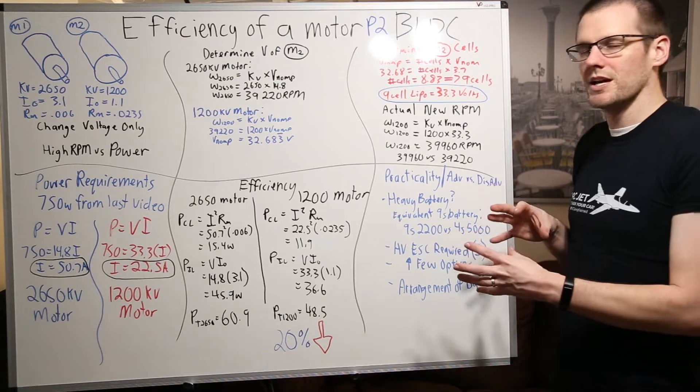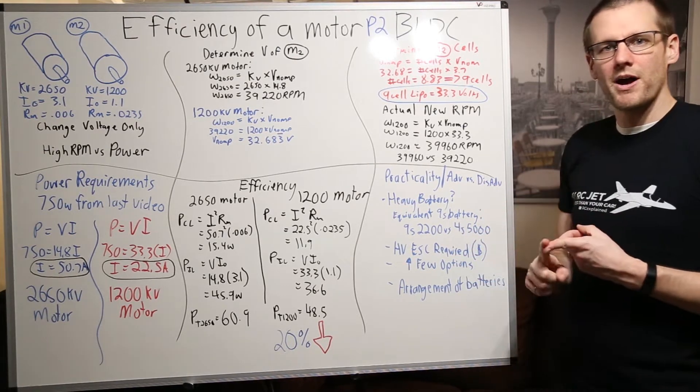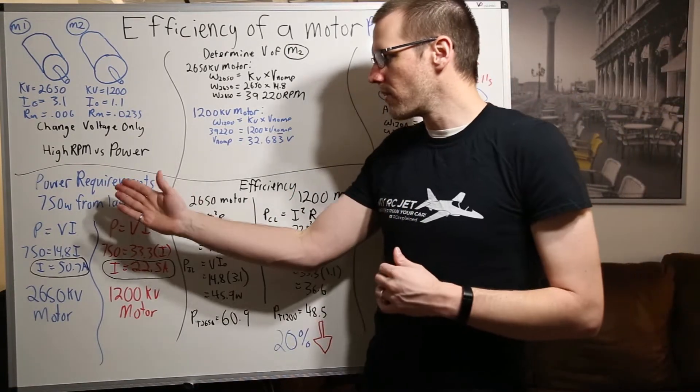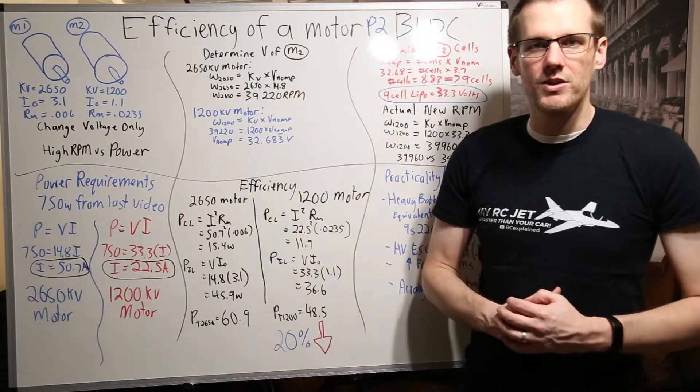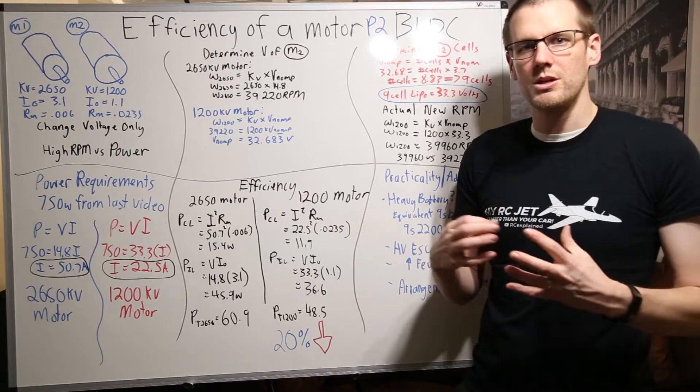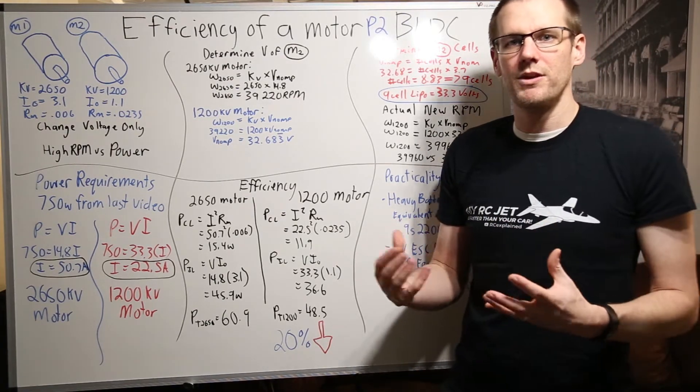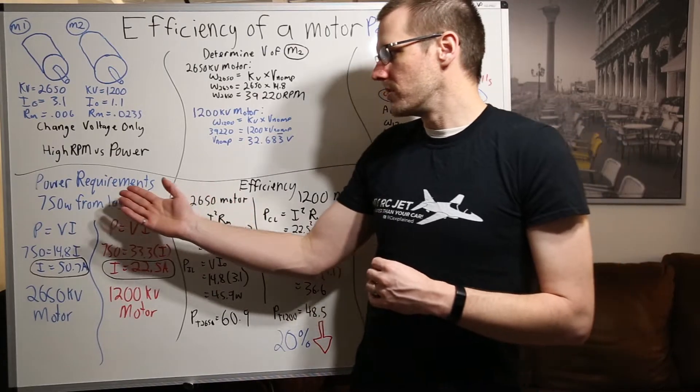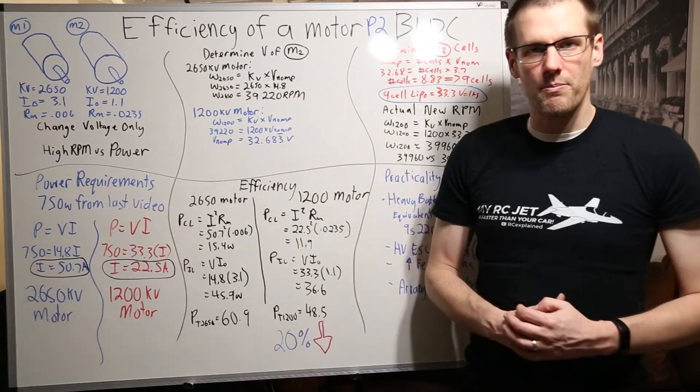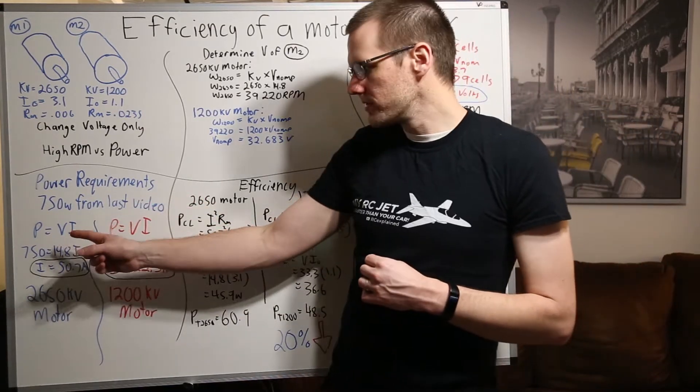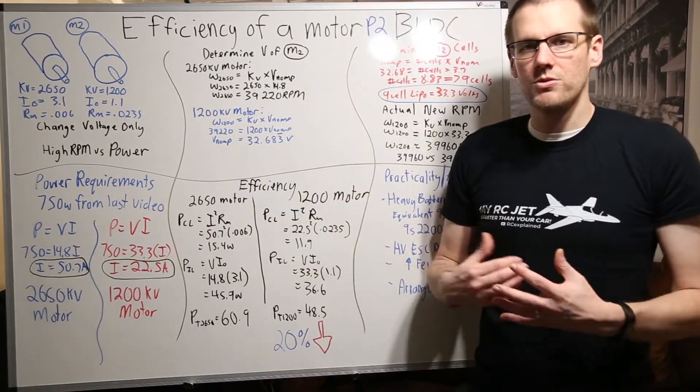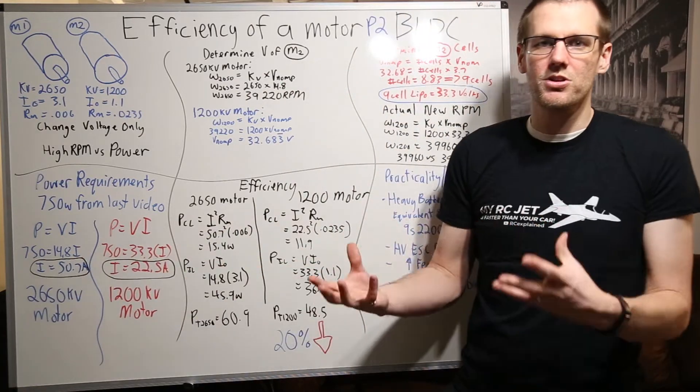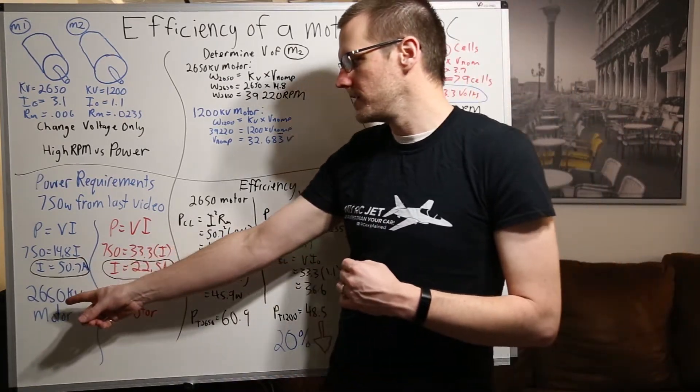The next step is getting into the details specific to this video which starts with our power requirements. Then we're going to talk about the efficiency and then we're going to be looking at the practicality advantages and disadvantages. For our power requirements we take the 750 watts that we used in the last video and this was roughly and loosely based off of achieving a top speed of 50 miles per hour and that would be during some course of the acceleration up to that speed. And then what we're going to do here is determine the actual current that we need to pull from each of our motors. Now power is equal to the voltage times the current. We take our 750 equal to 14.8i. i represents our current. We do the calculation and i is equal to 50.7 amps and we should have known that from the last video. This is for our 2650 kV motor.